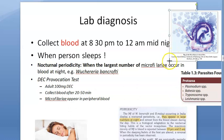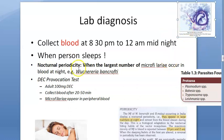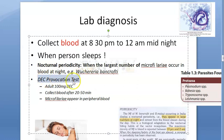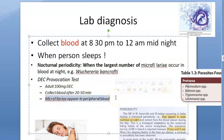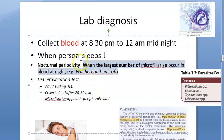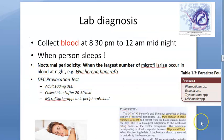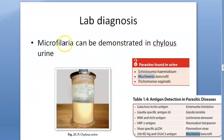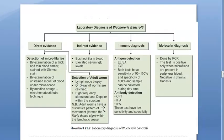For lab diagnosis, you can give the patient DEC and collect blood after half an hour — all the microfilaria will appear in peripheral blood. This is because microfilaria are more active at night and come out into the blood nocturnally. So instead of collecting blood at night, you can do a DEC provocation test. Microfilaria can also be demonstrated in urine.